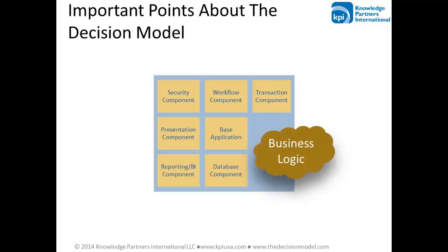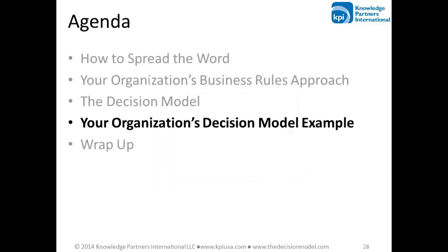We introduced the decision model in our book in 2009, and it has three parts. It has a business-friendly diagram, a structural diagram. It has detailed rules inside in two-dimensional tables called rule families. And the third piece, often overlooked, is a business-friendly glossary. We allow business people to specify the names and definitions of the data they use without concerning themselves with how they're stored in the database.